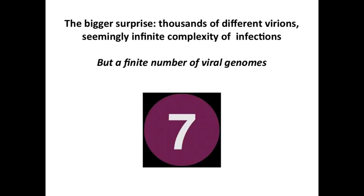Even bigger perhaps than showing nucleic acid is the genetic information — because for cells we already knew the DNA was the genetic information — what is really surprising is this: I've told you about billions and billions of viruses of all different kinds, shapes, and forms, yet in the end you can make them all fall into very nice categories because they only have a finite number of nucleic acid genome types.